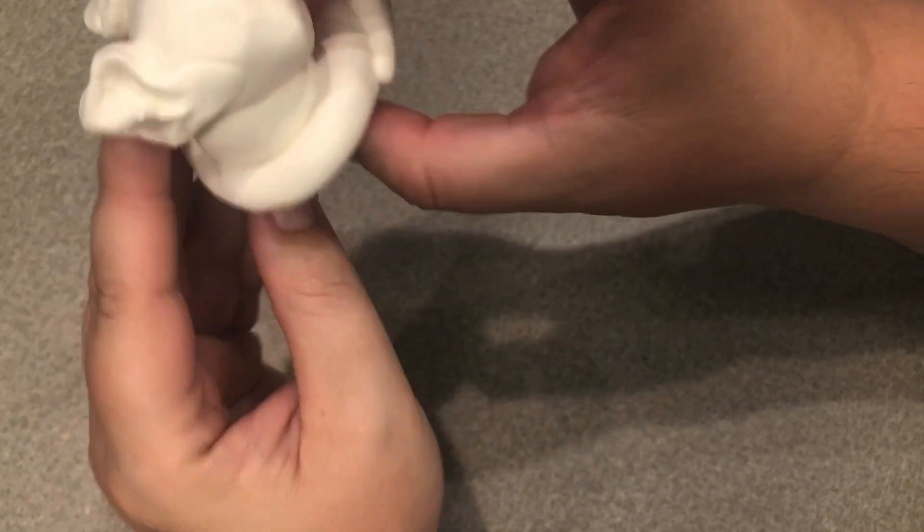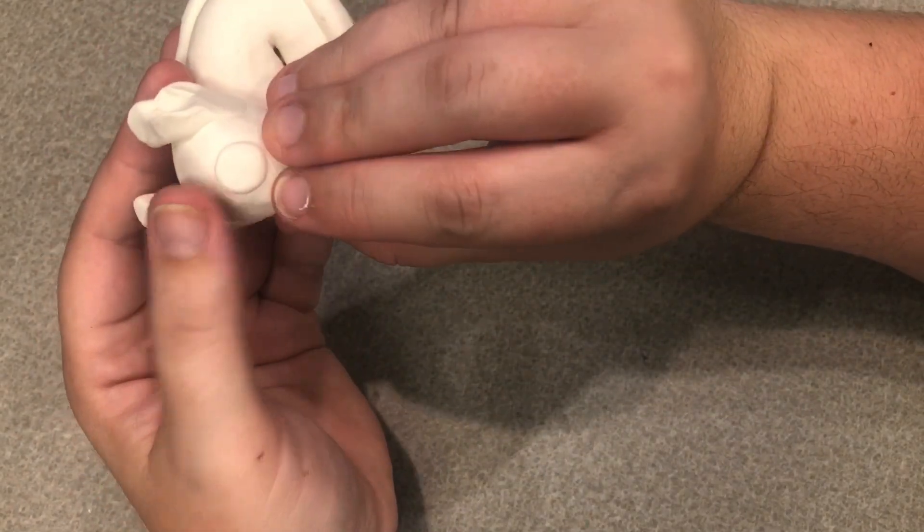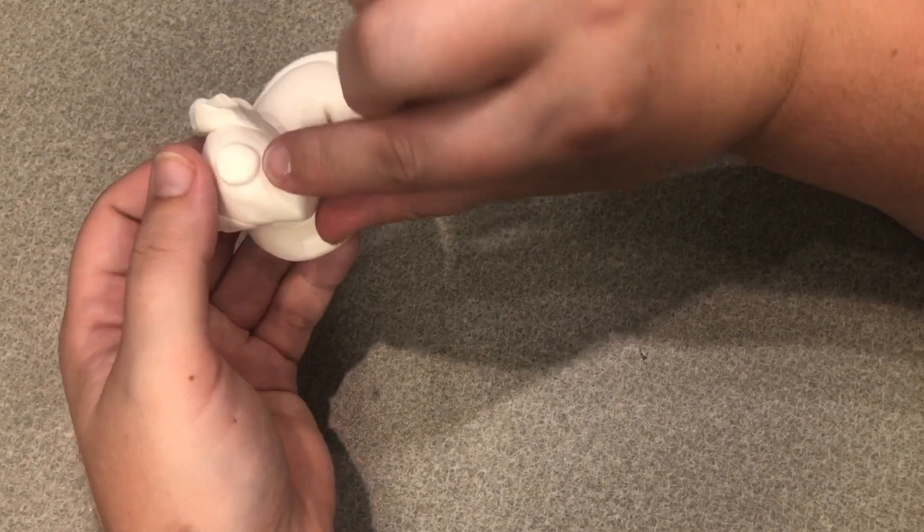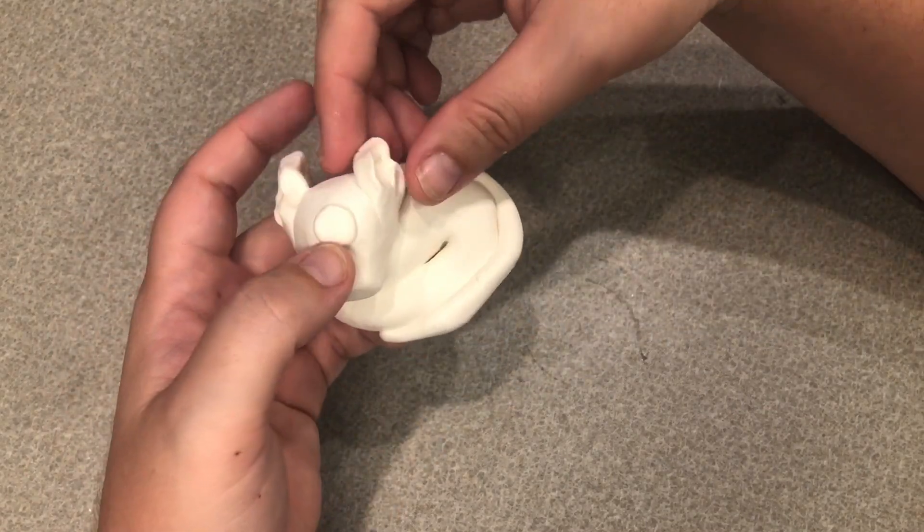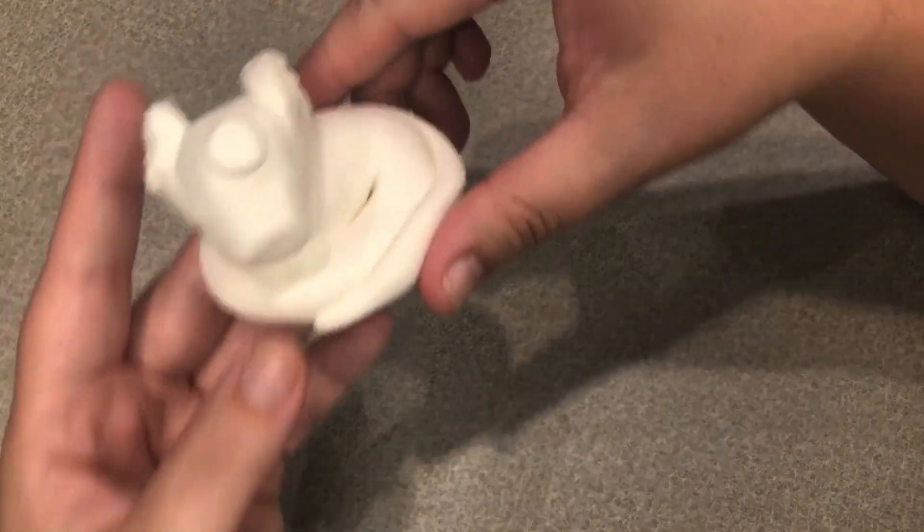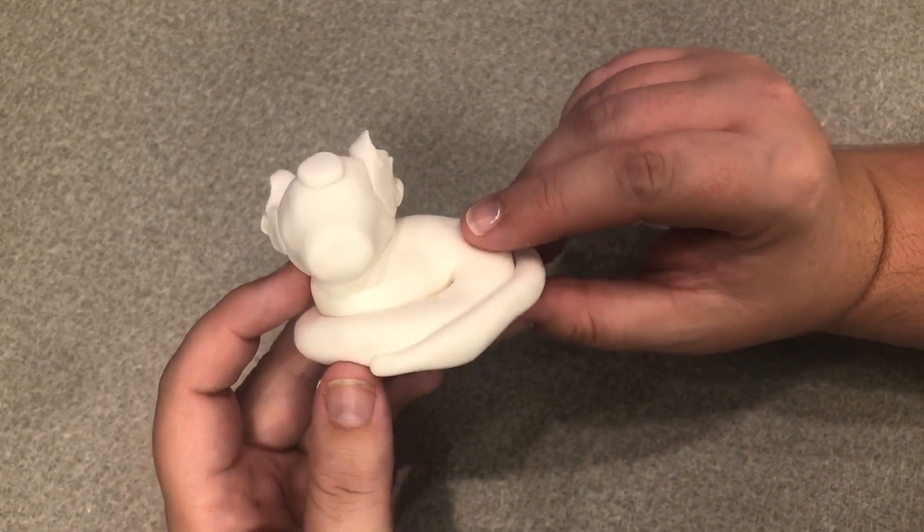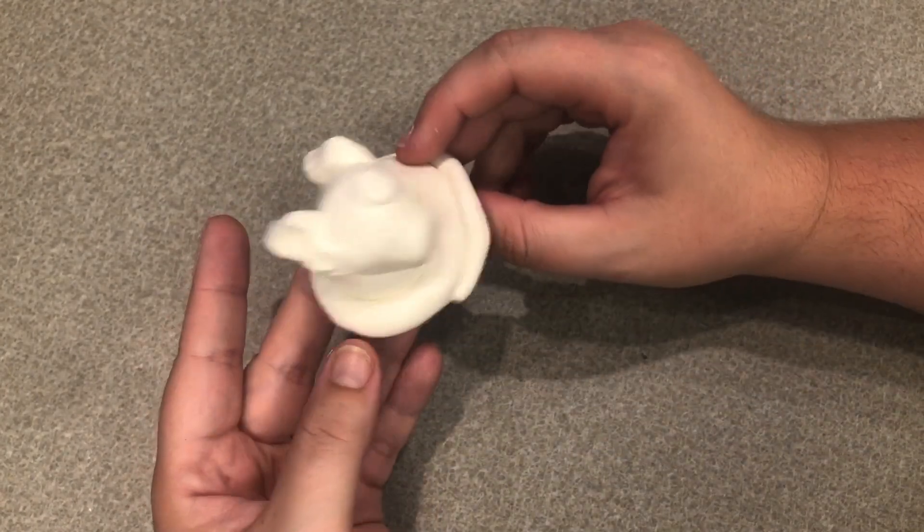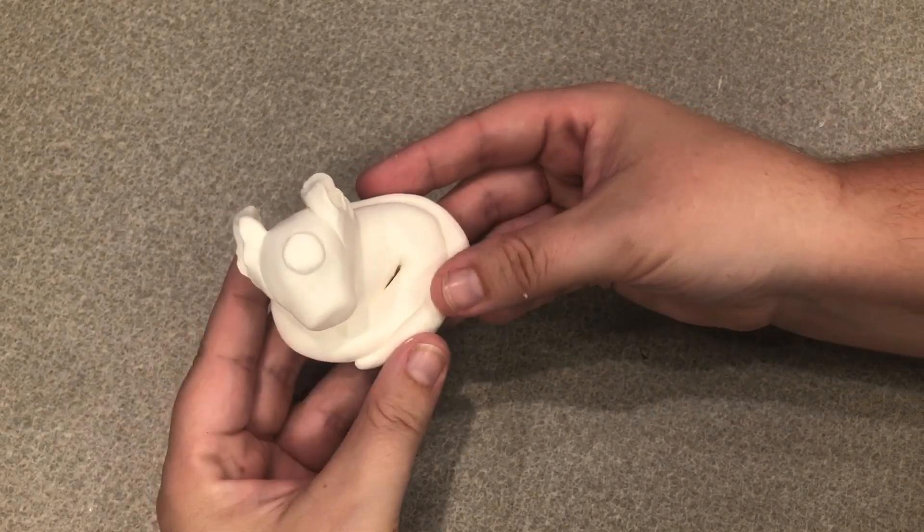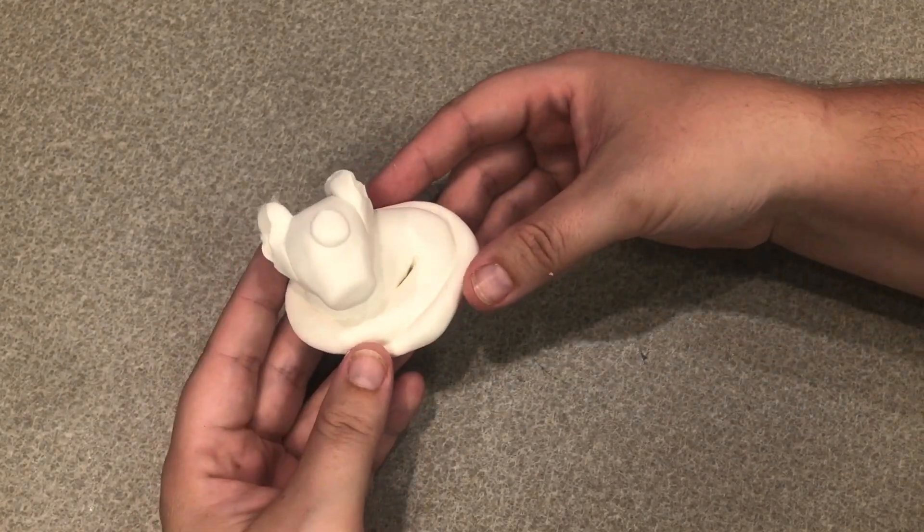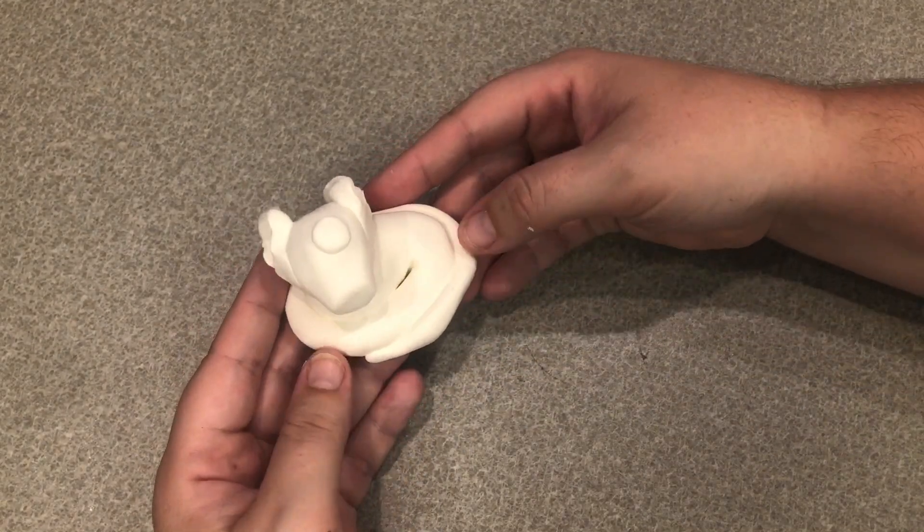If you need to add any more shaping you can do that. And then our little sleepy Dratini figure is done. Now we just need to let the clay dry so you'll probably have to let it dry for a day or two.